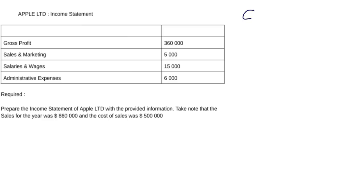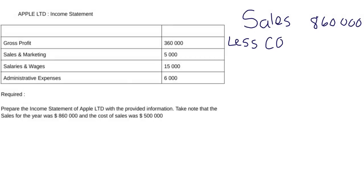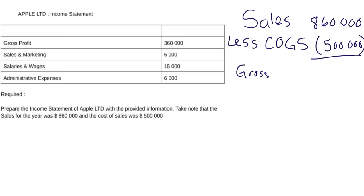You're given your sales already, and your sales is eight hundred and sixty thousand. When you get your sales, you have to less your cost of sales — the cost of your goods sold — and in this case it's five hundred thousand. When you get that amount you will get your gross profit, which is three hundred and sixty thousand.